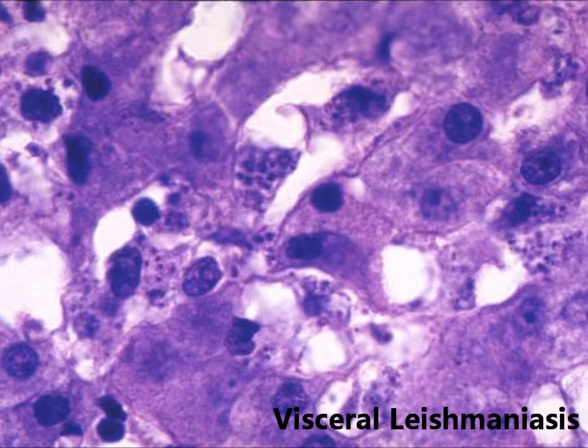Systemic or visceral leishmaniasis affects the entire body. This form normally occurs 2 to 8 months after a person is bitten by an infected female sandfly, but may take years for any symptoms to be present. It can lead to deadly complications — the parasites damage the immune system by decreasing white blood cells and destroying several internal organs. Infected people usually have fever, weight loss, enlargement of the spleen and liver, and low blood counts. Visceral and cutaneous leishmaniasis mainly affect children and young adults.